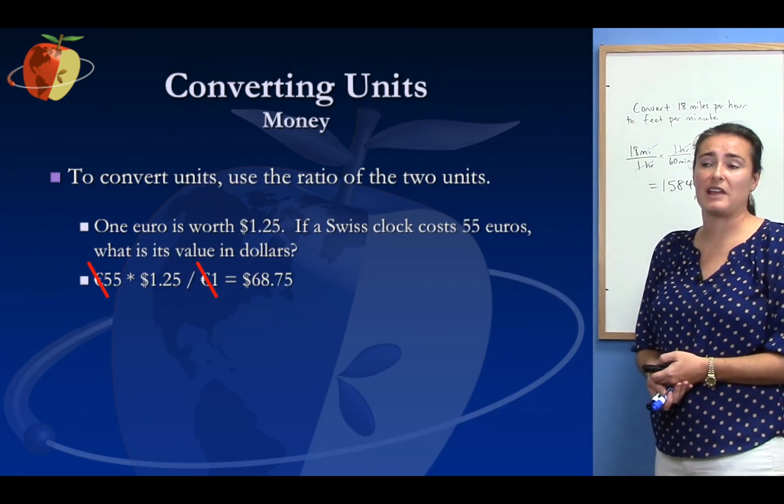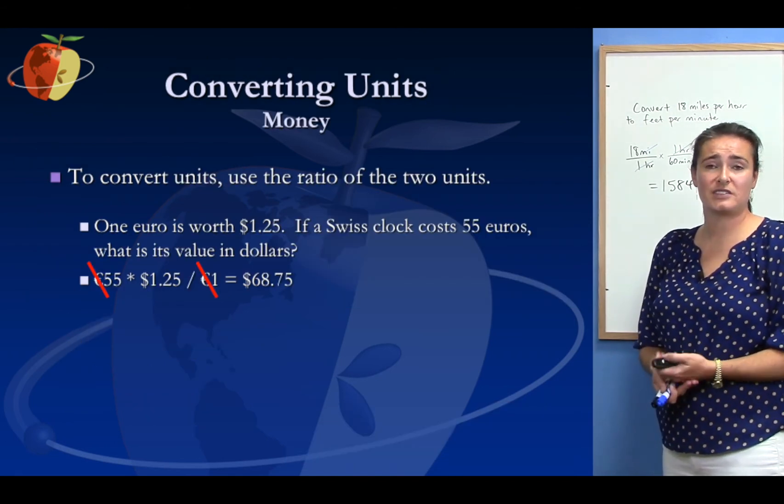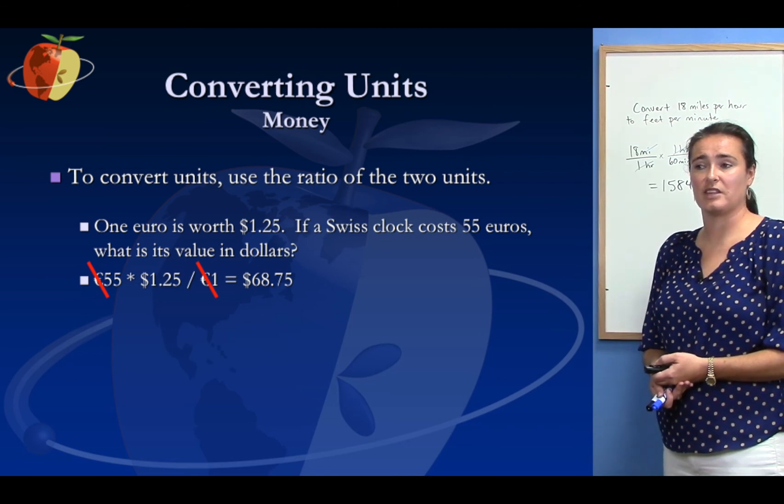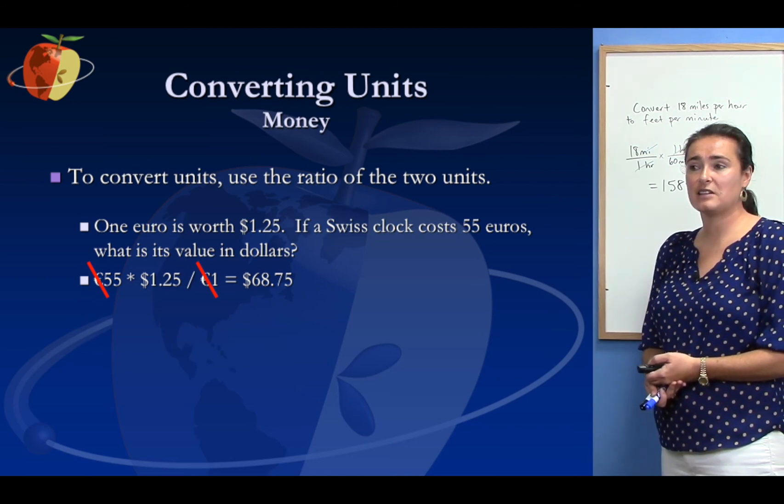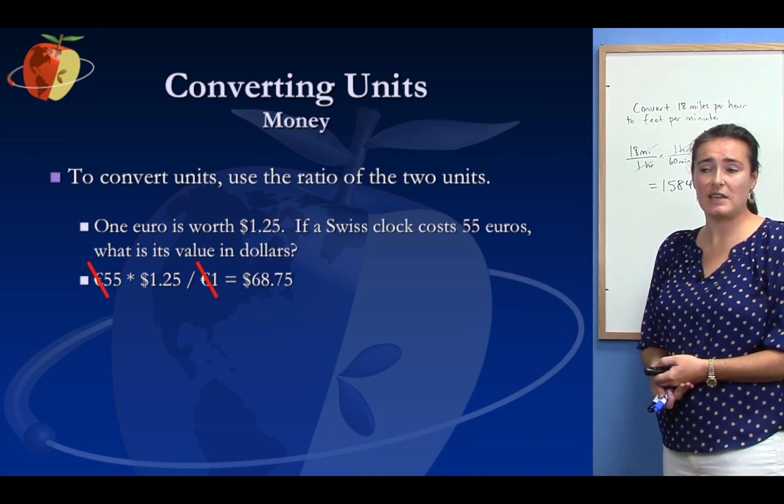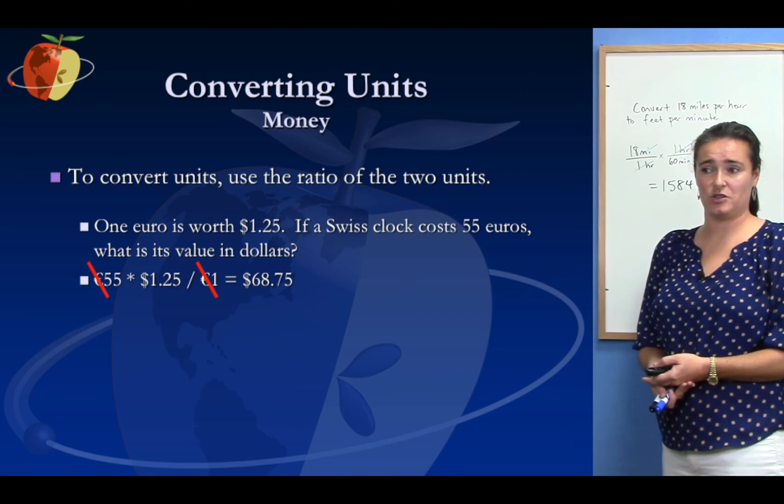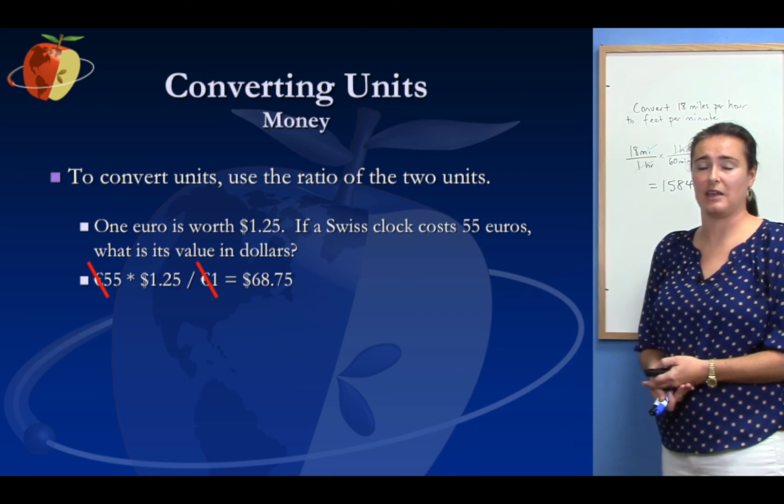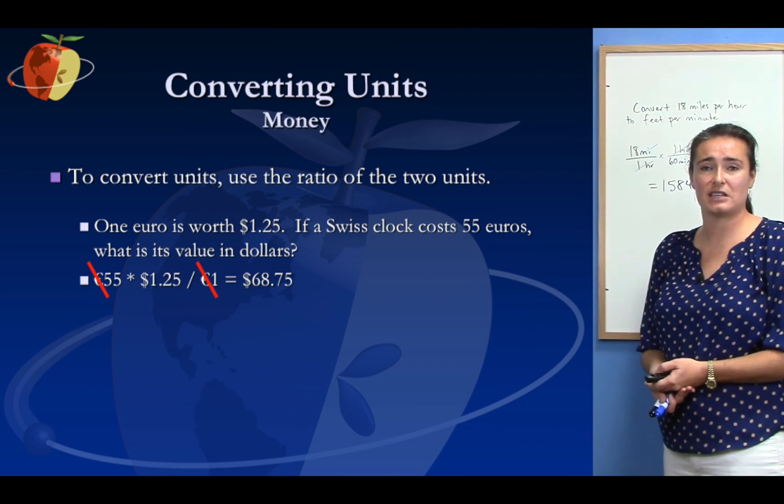To convert units, we use the ratio of two units. So here's another example with money. One euro is worth $1.25. If a Swiss clock costs 55 euros, what is its value in US dollars? So what I'm doing is 55 euros multiplied by 1.25 in the numerator for dollars divided by 1 euro. Those euro units cancel out and we're left with $68.75.